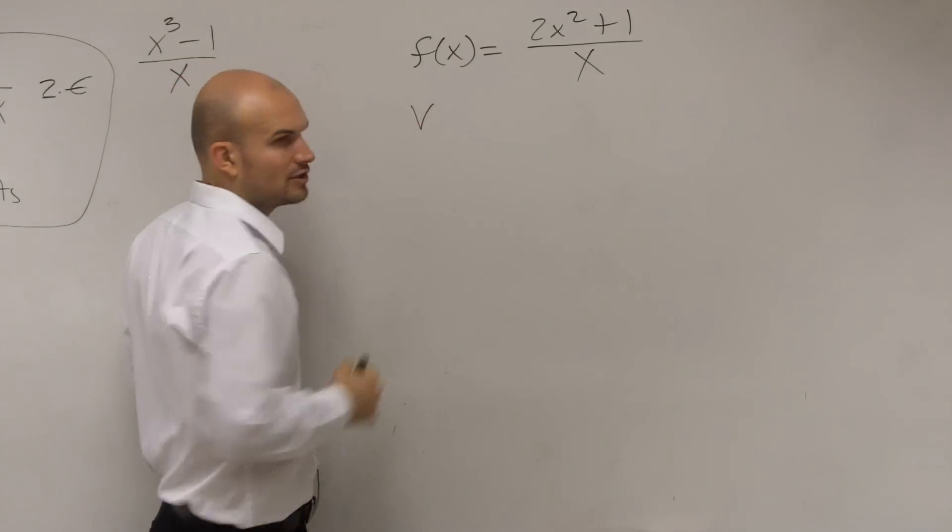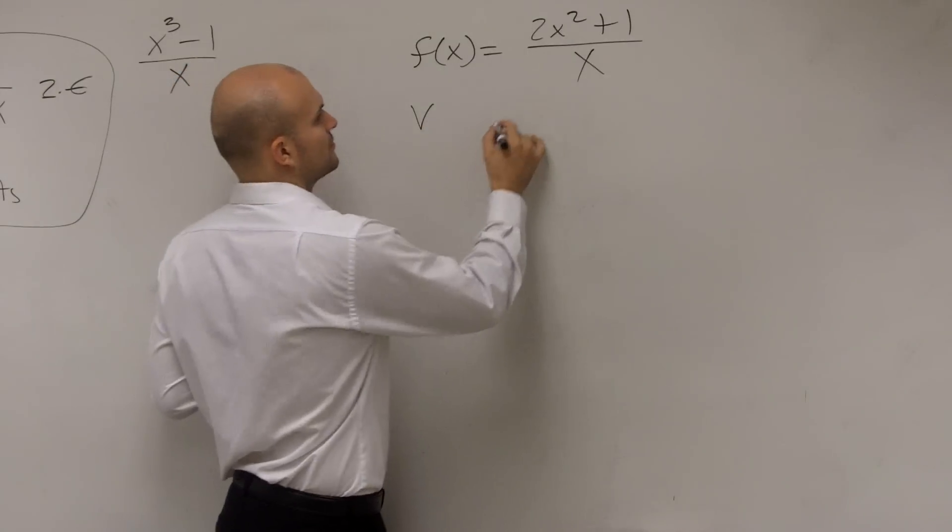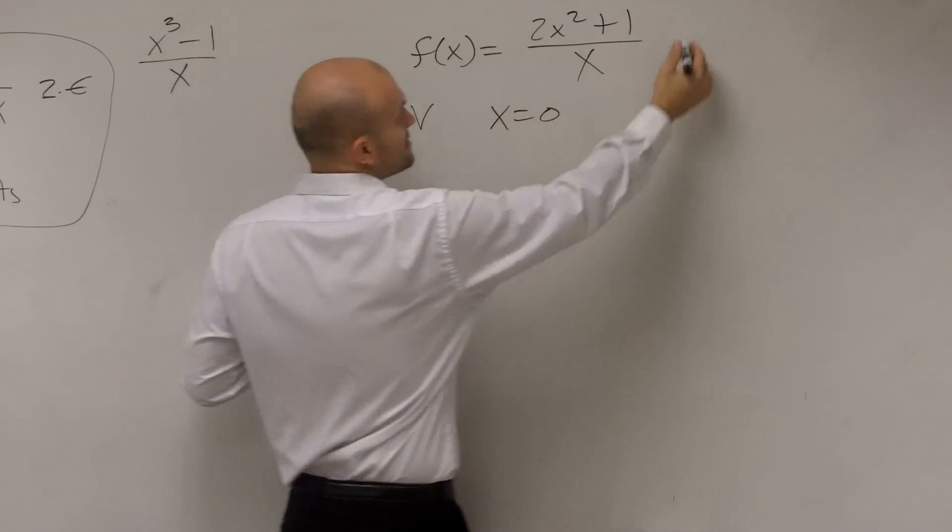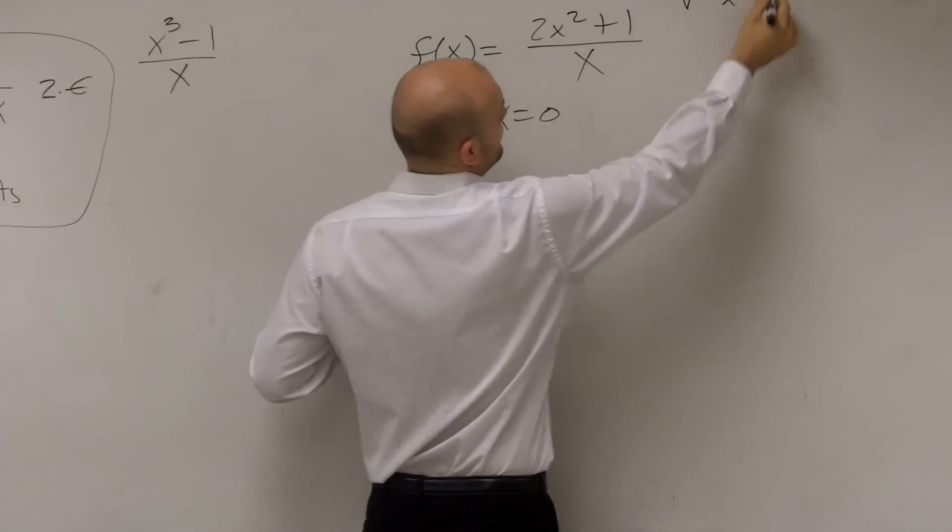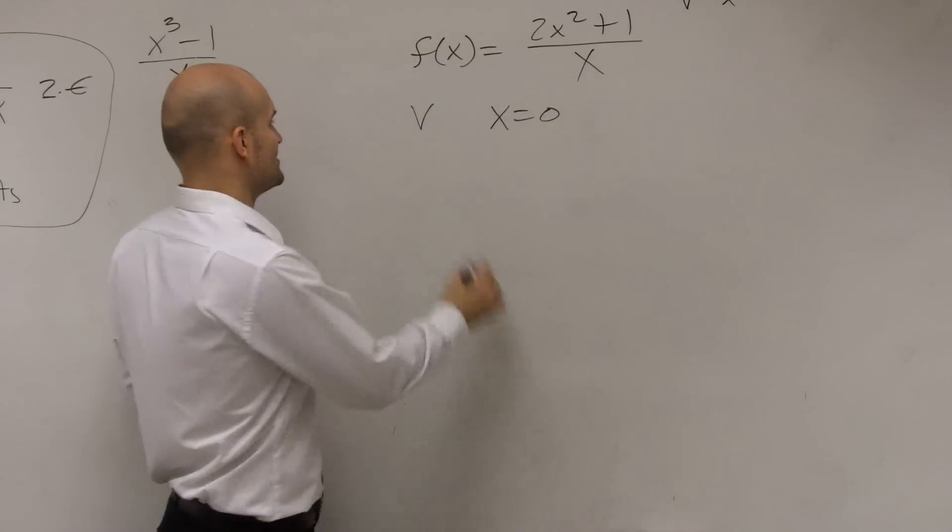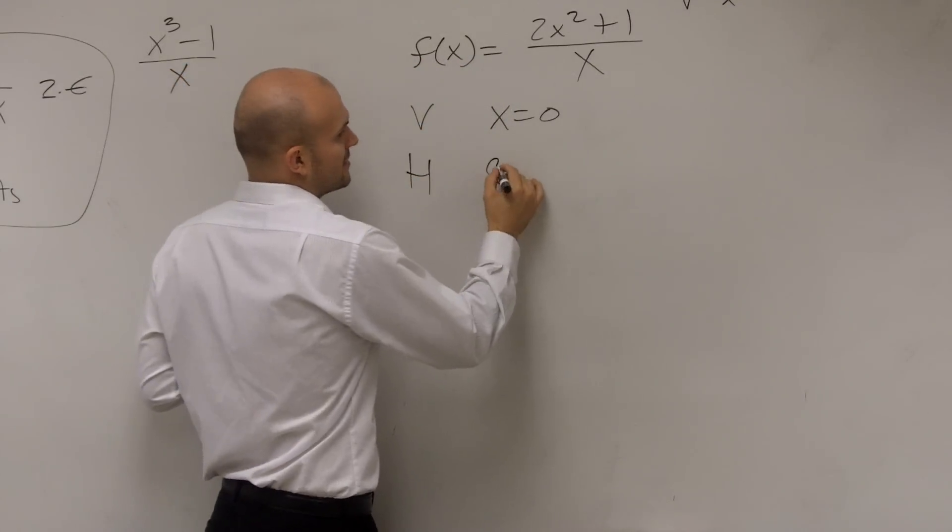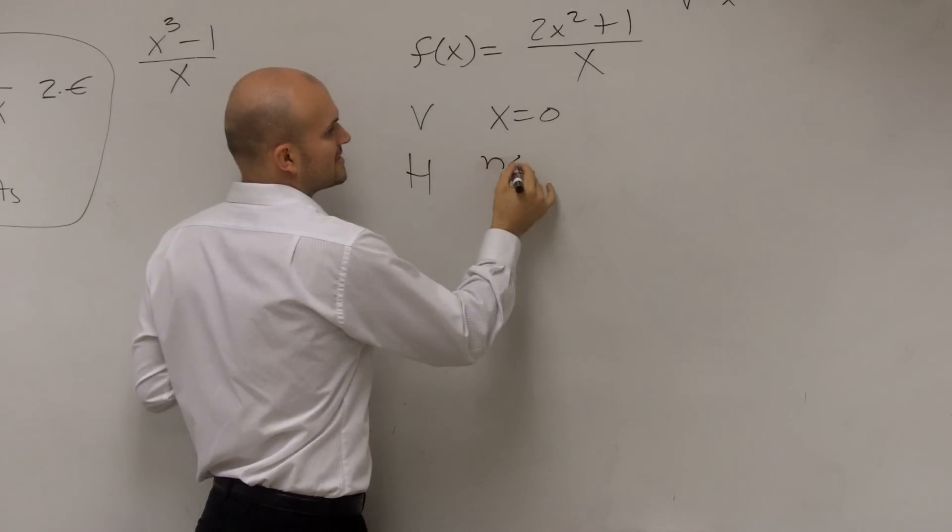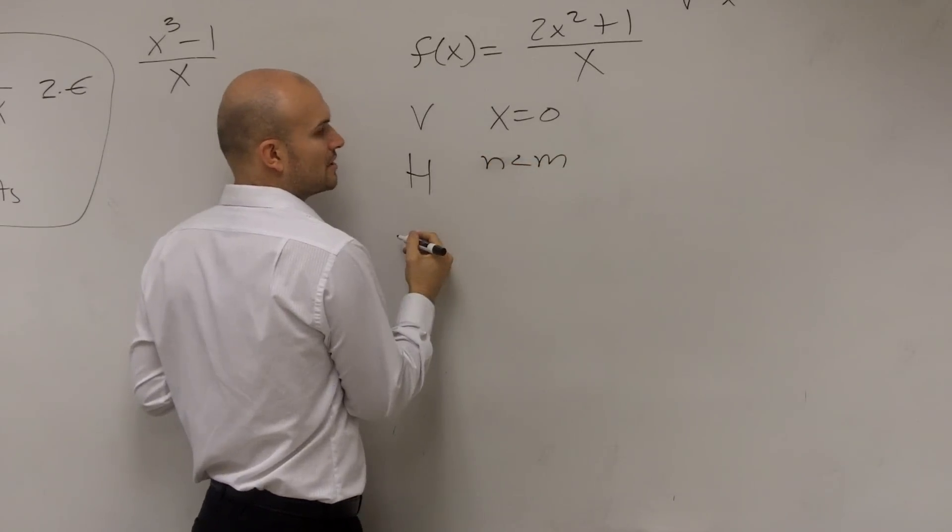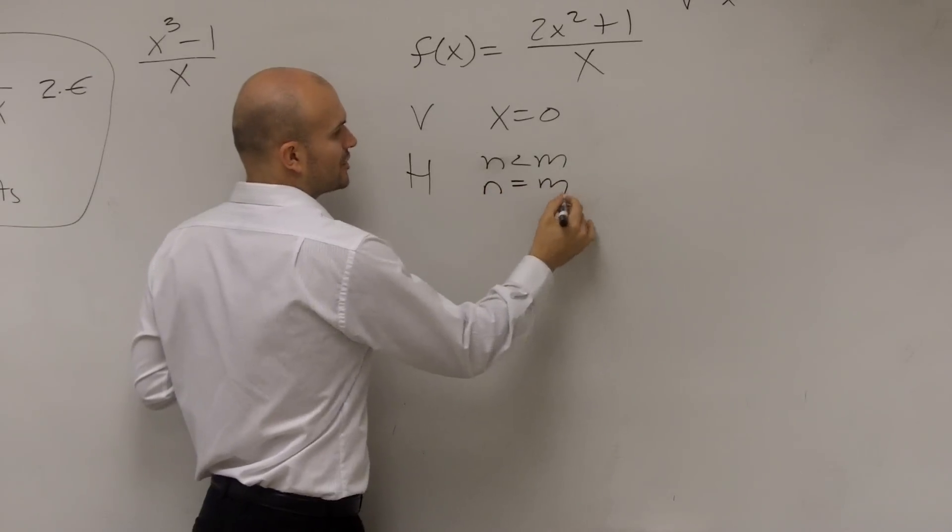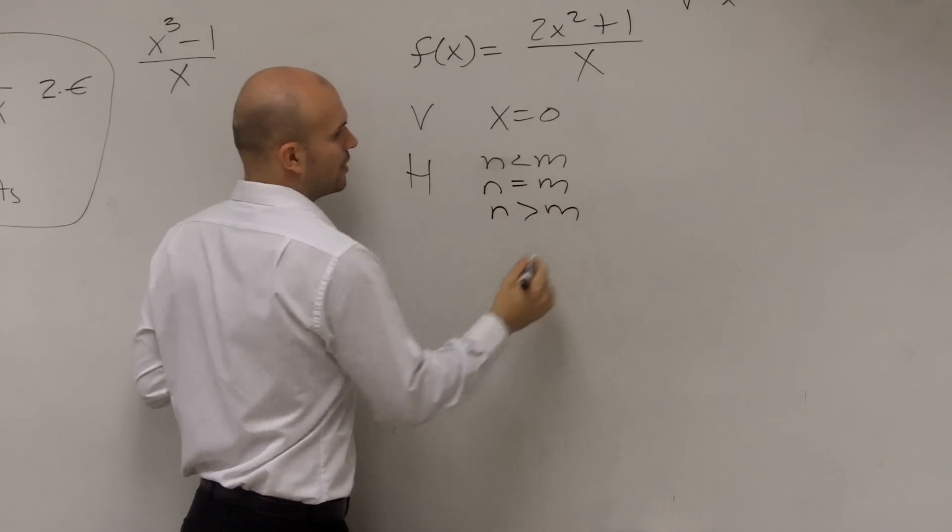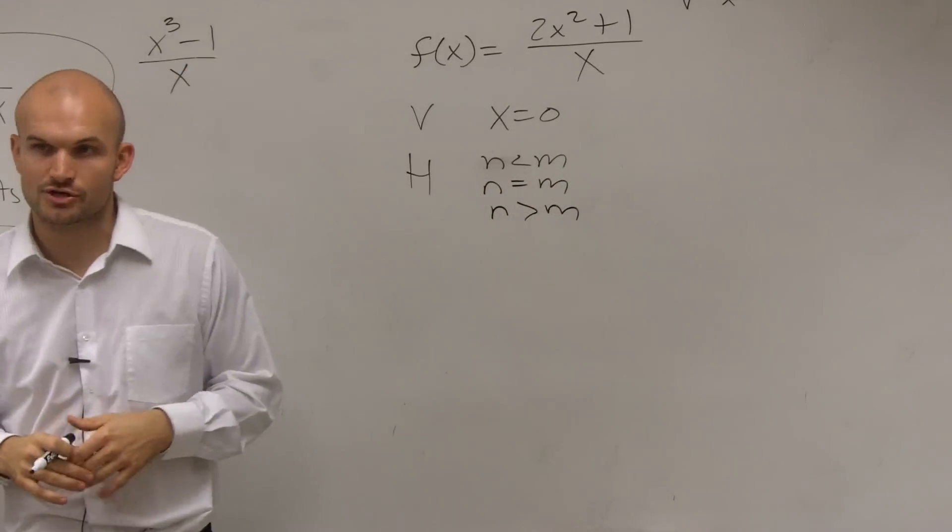So let's do the first one, vertical asymptote. Set your denominator equal to 0. Now that was easy, right? Horizontal, you have three choices. Your denominator is either the degree in your denominator is either less than the degree in the numerator, your degrees are equal, or your degree in your numerator is larger.